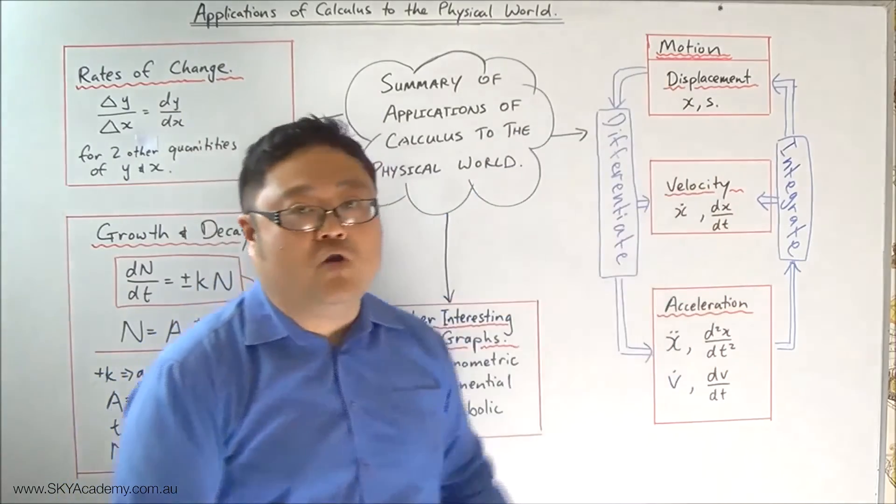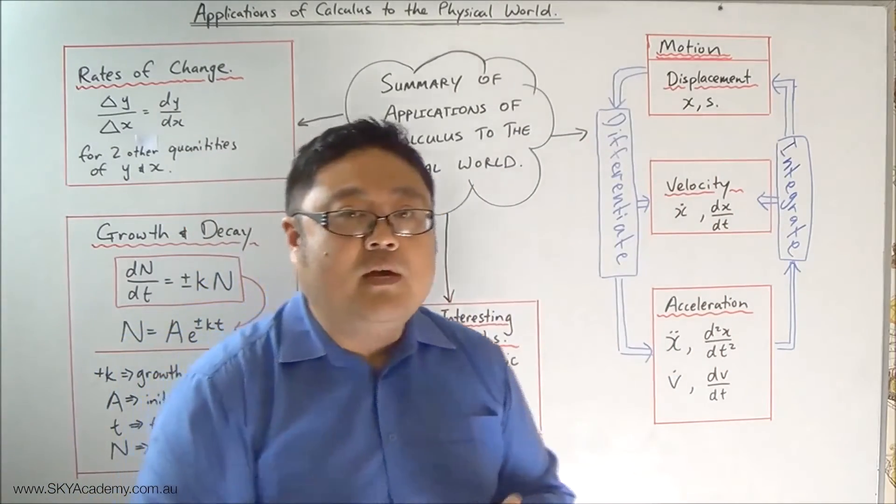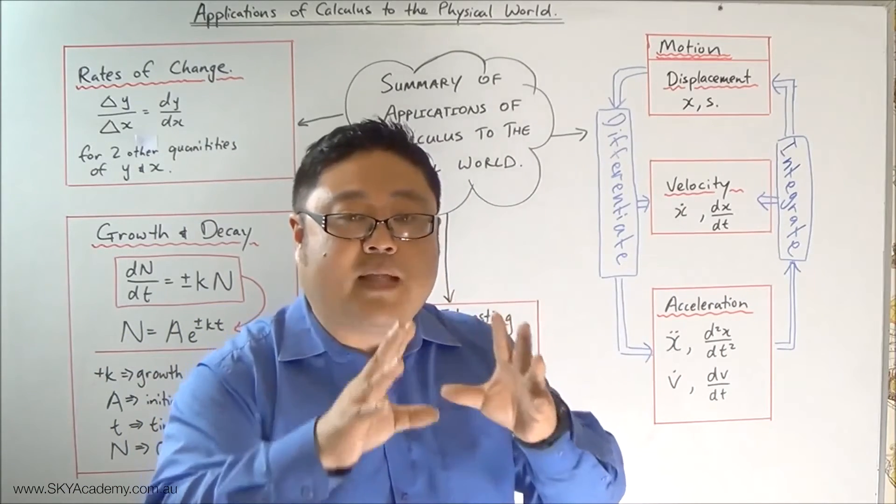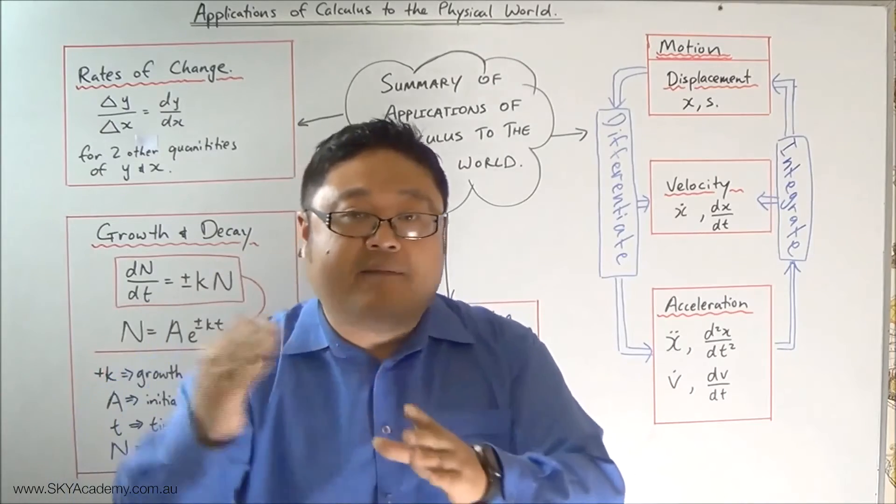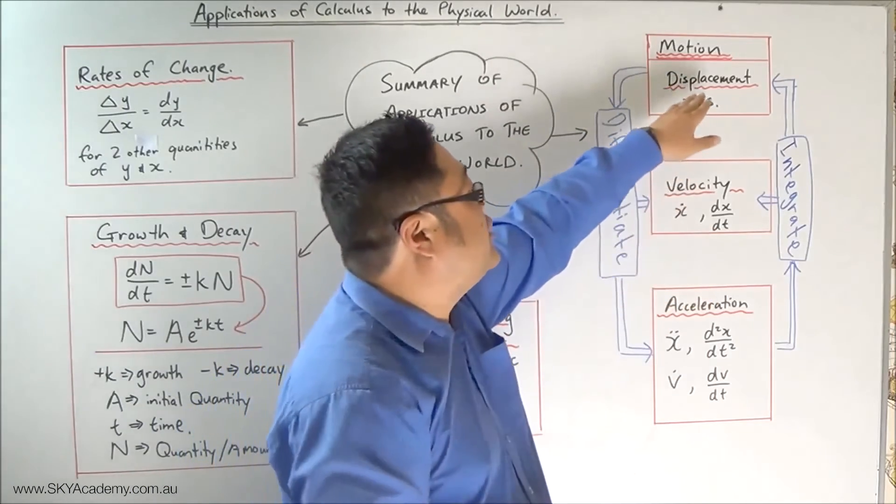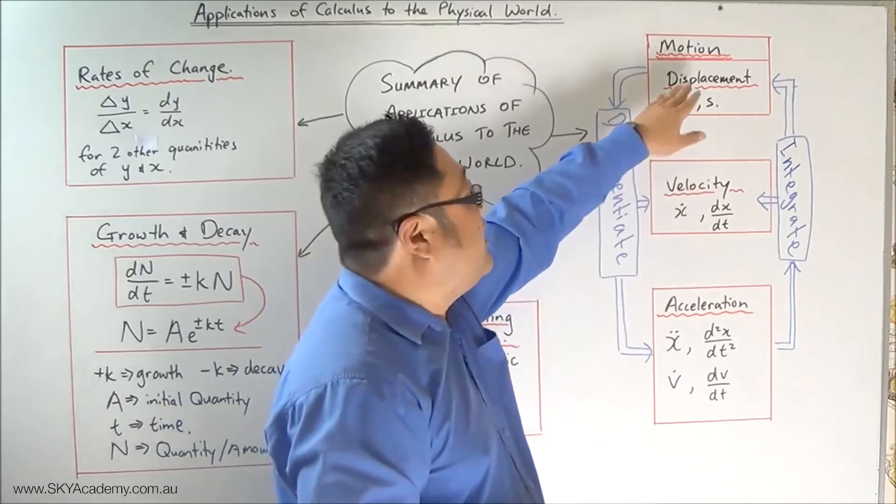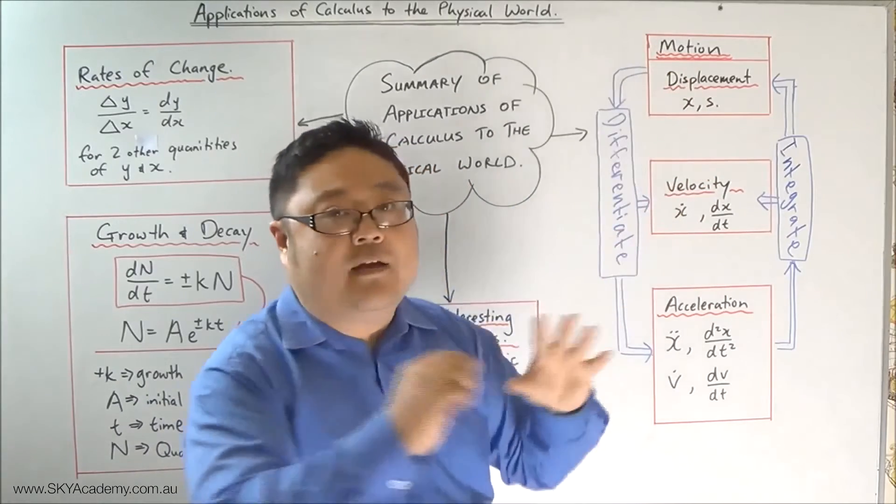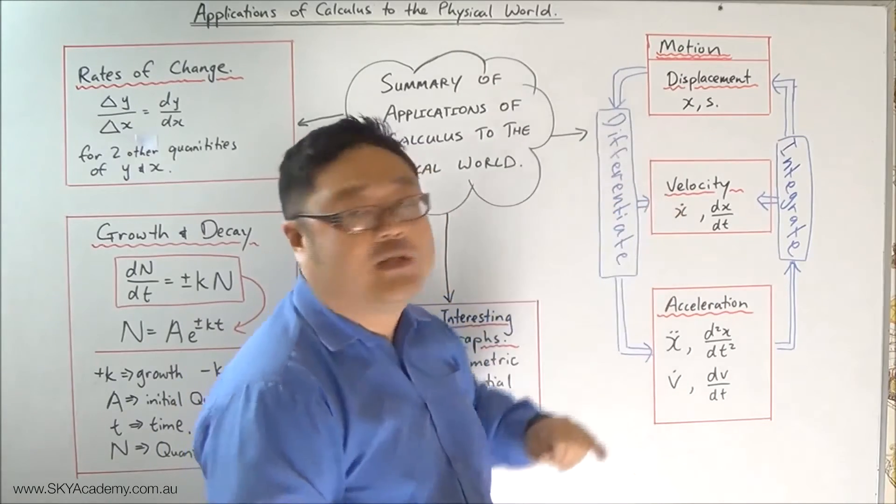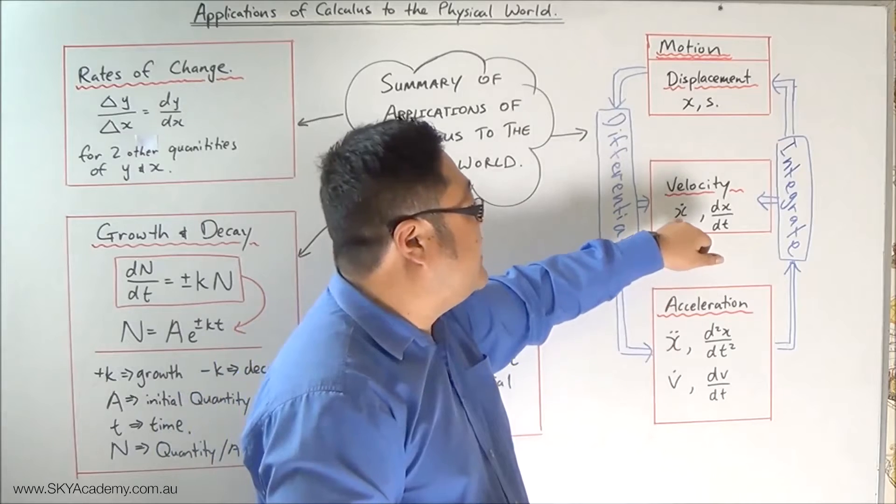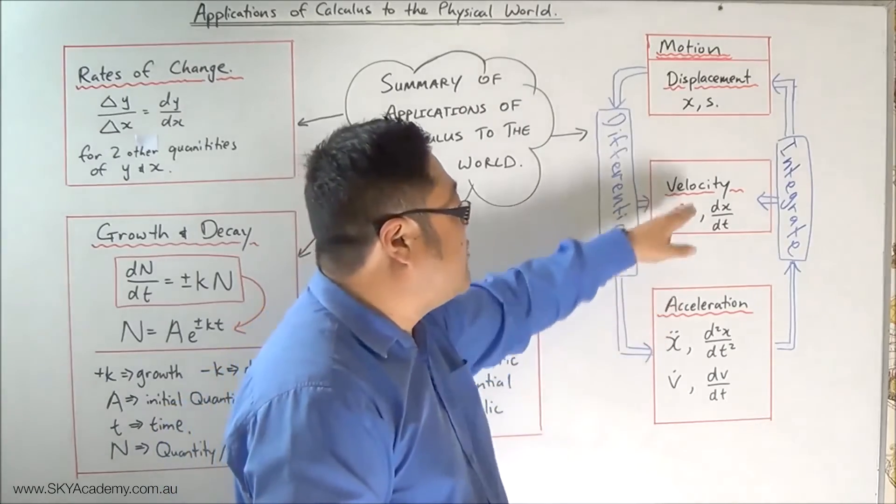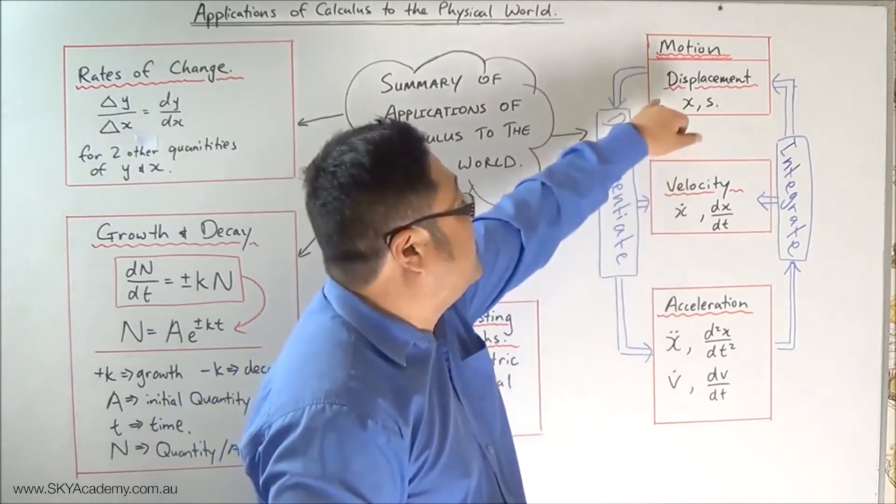The next thing we did was we got to look at motion. We got to look at how motion is really just rates of change of position or displacement with respect to time at various levels. So we got to see motion as position or displacement in motion. We got to see that the rate of change of position or displacement over time is velocity, expressed in Newtonian notation as x dot or dx/dt in Leibnitz notation, and that acceleration is the second derivative of displacement.